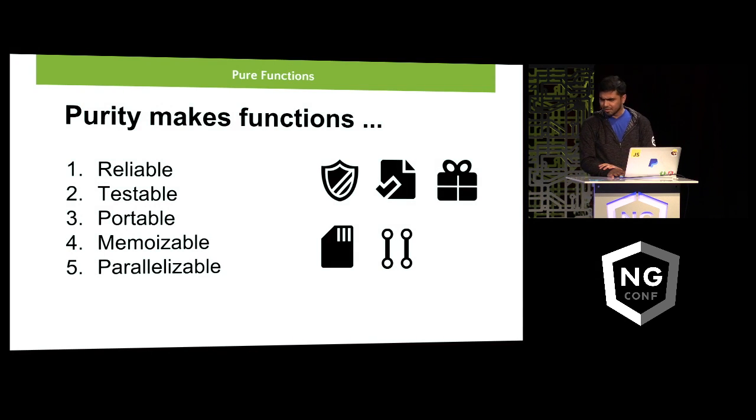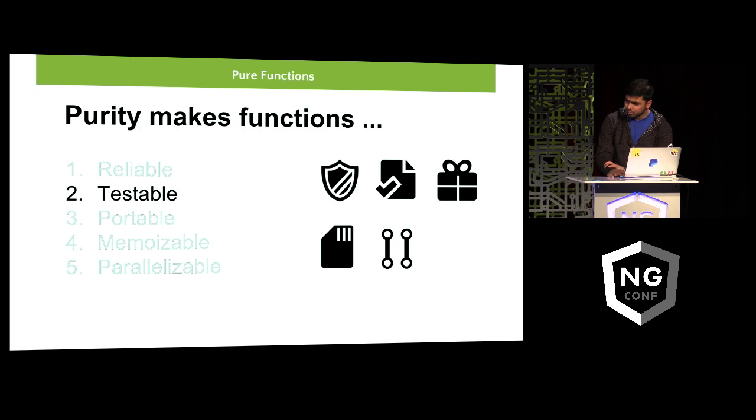So purity. It's reliable because it's predictable. It's testable because it does not have ghost inputs as we discussed. It's portable because it's independent of the environment. It's memorizable because it can help us create history and memorize them. And then it's parallelizable because that's a tongue twister. It's parallelizable because it does not affect shared state, so things can go in parallel.